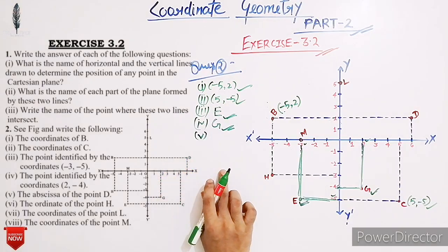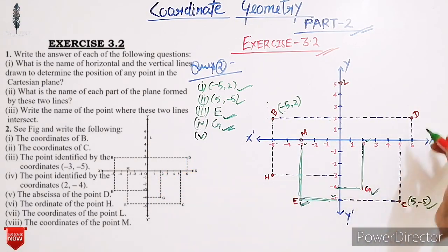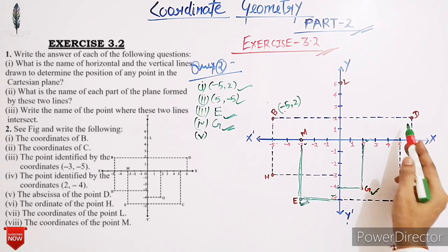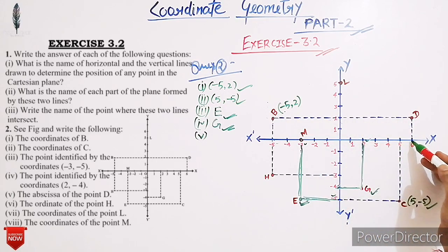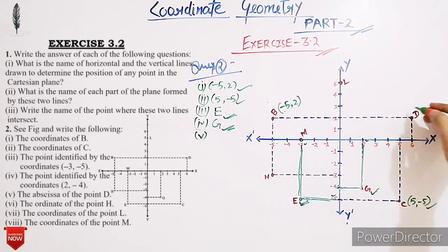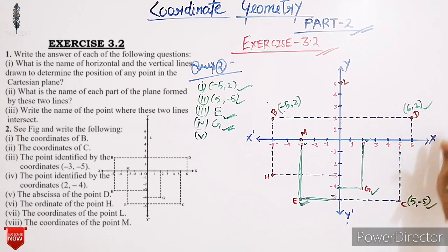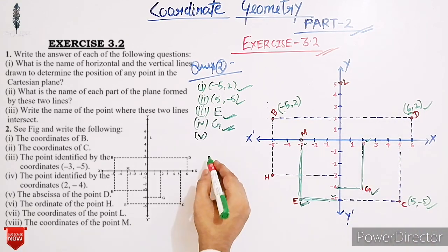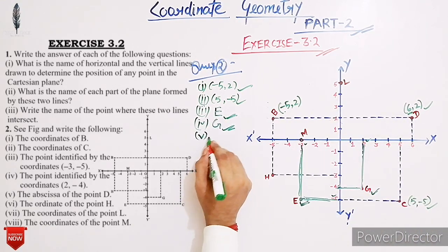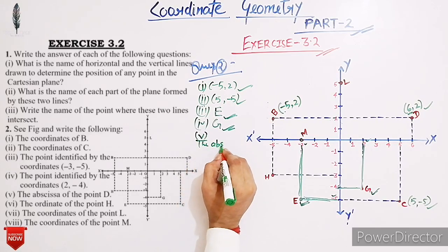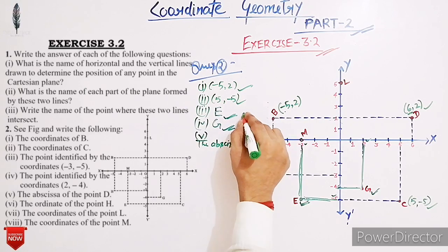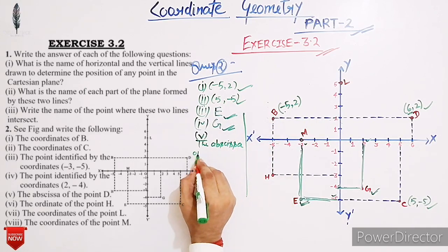Next, we have to find the abscissa of point D. The distance of D from the y-axis is 6 units and the distance of point D from the x-axis is 2 units. This point lies in the first quadrant — in the first quadrant, abscissa and ordinate are both positive. So the coordinates of point D are (6, 2), and the abscissa of point D is 6.